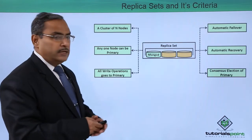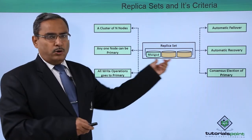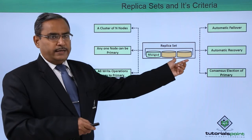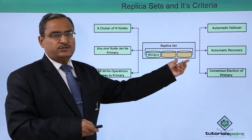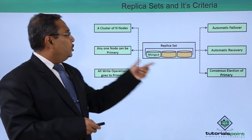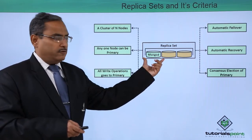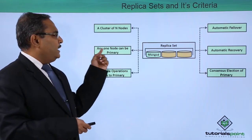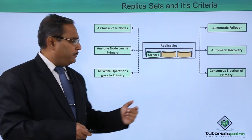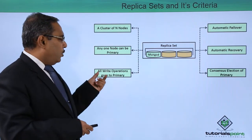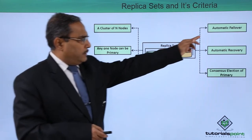Consider this figure: we have multiple MongoD applications running, and only one is primary while the rest are secondary. In a cluster of n nodes, any one node can be primary — there is no fixed priority. All write operations go to the primary as mentioned earlier.